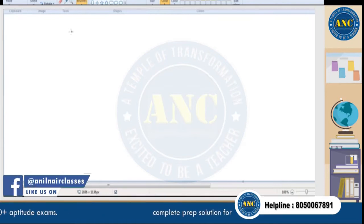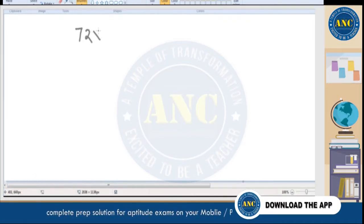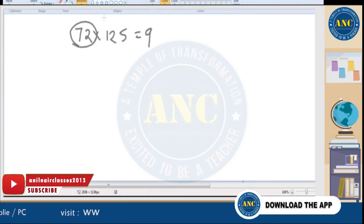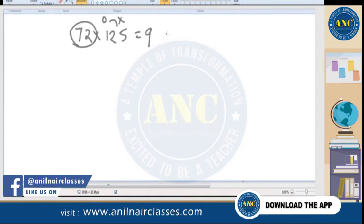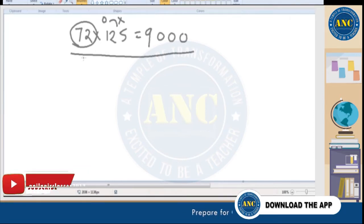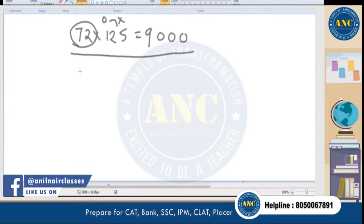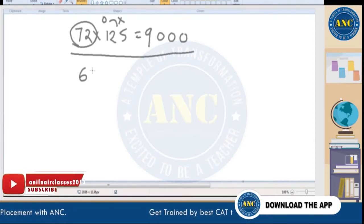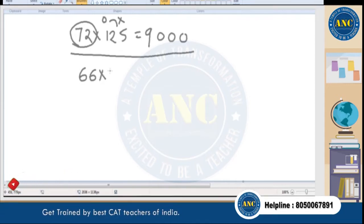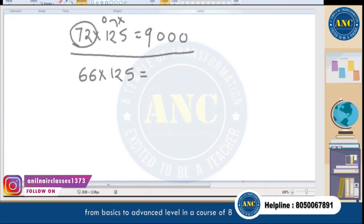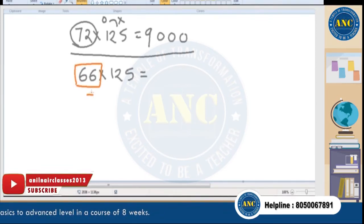Previously for 72 × 125, dividing 72 by 8 gives 9 with remainder 0, so the answer was 9000. Now let me take the example 66 × 125 — a number not perfectly divisible by 8.